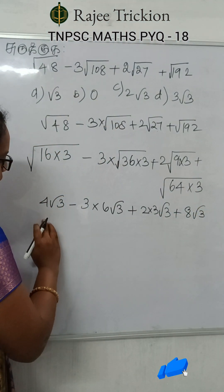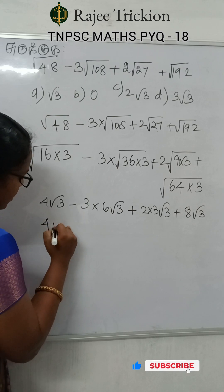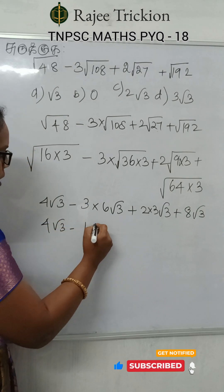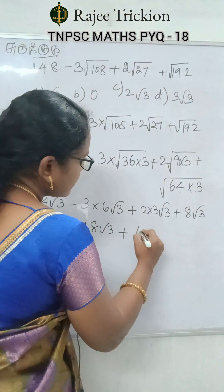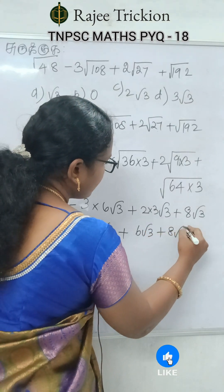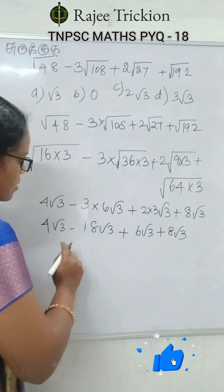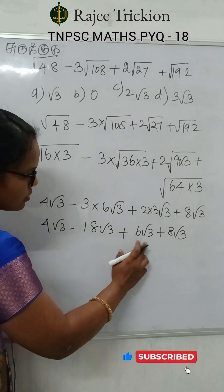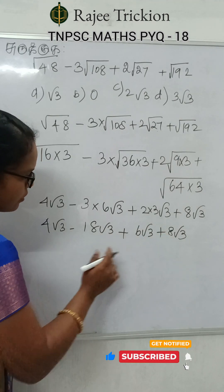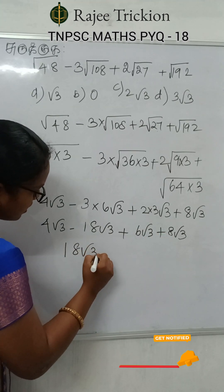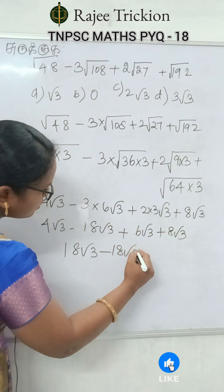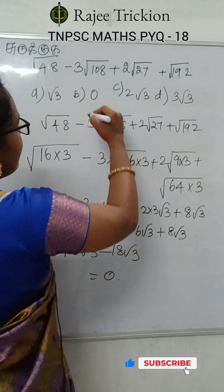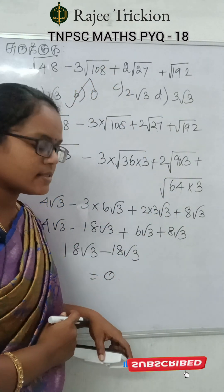Add all terms together: 4 into root 3 minus 18 into root 3 plus 6 into root 3 plus 8 into root 3. This gives 2 into root 3 minus... the result is 0. The final answer is B. B is the right answer.